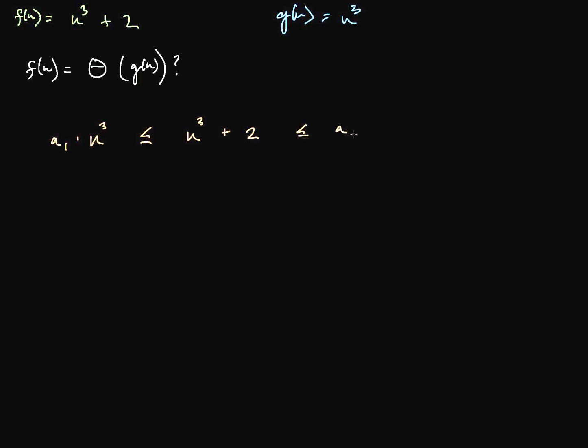Which is less than or equal to A2 times N cubed for all N greater than or equal to B. And if we choose B to be one, nice and easy, then we should say that A1 will be less than or equal to 3, which is less than or equal to A2. So 3 will be somewhere in between A1 and A2.